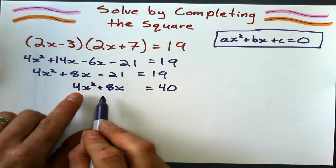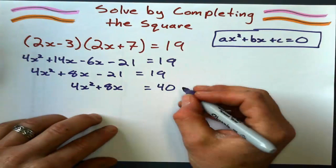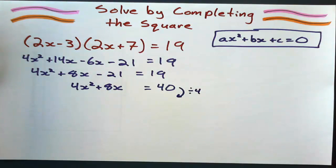Okay, now before I do anything, I see this 4, and this 8, and this 40. And I know that I can clean that up by just dividing them all by 4. Every term by 4.